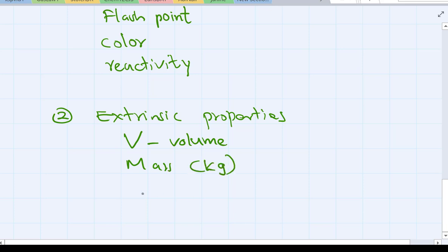And M, mass or kilograms. And so the V volume means amount could be one liter, two liter, five liter. And the mass kilogram could be one kilogram, half a kilogram, one gram, something like that. Depending on the amount, it changes. That's the extrinsic properties, so extensive properties.